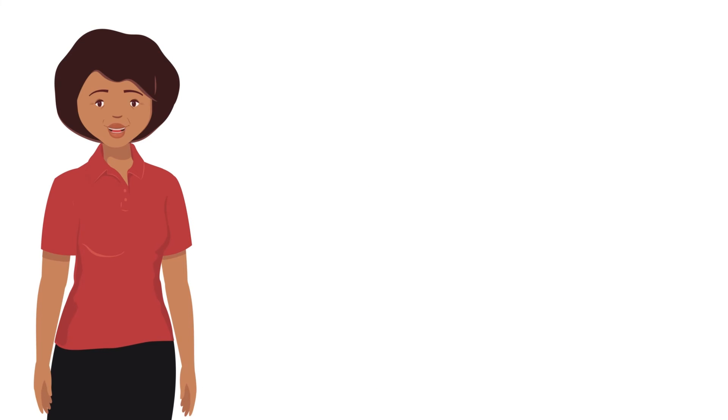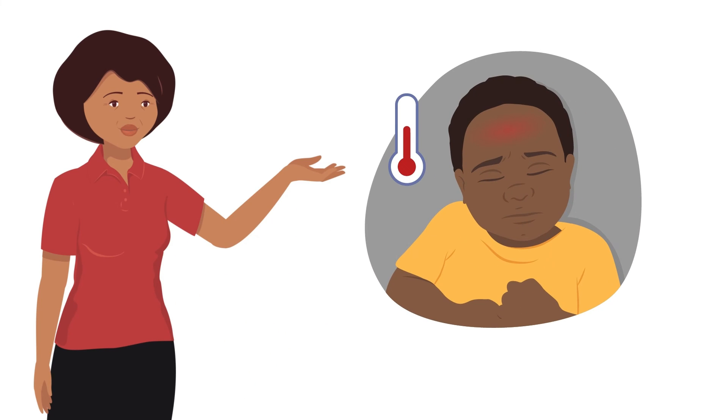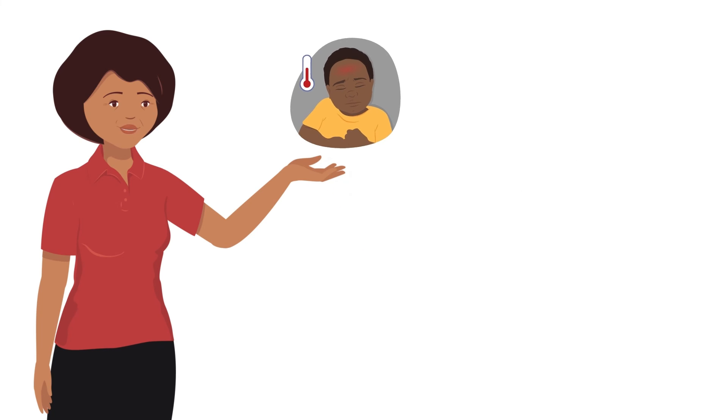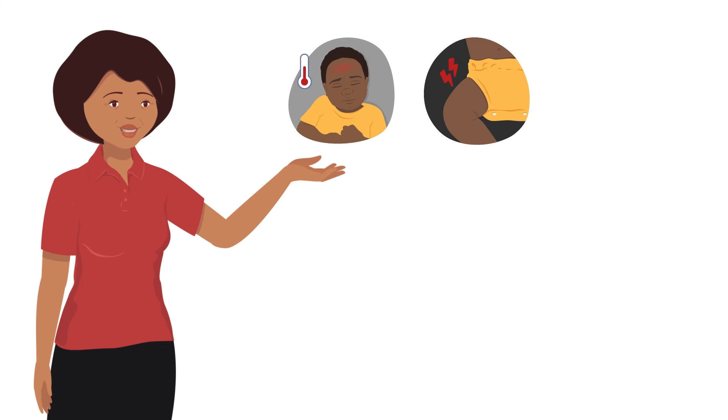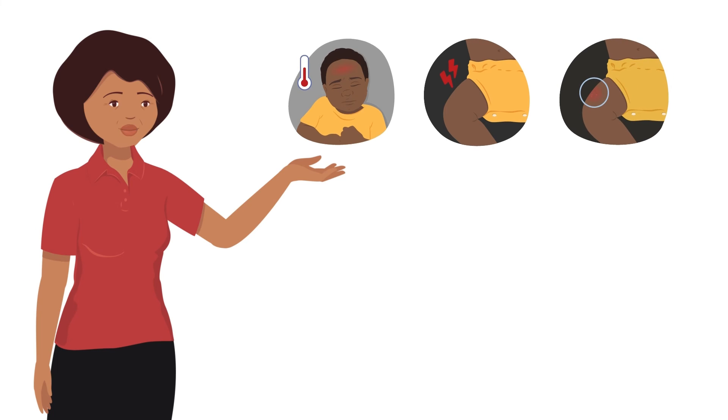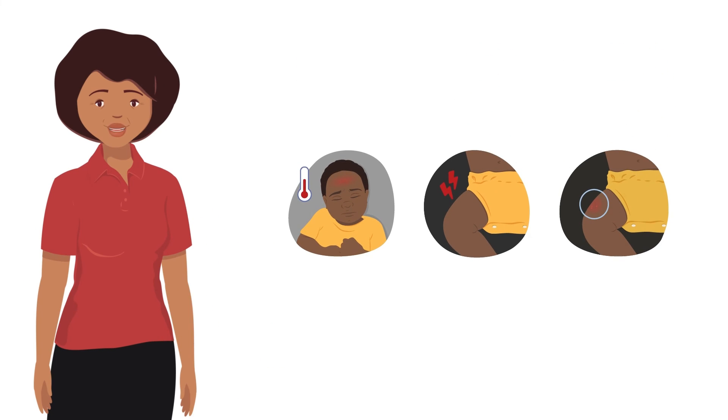But to build up its defenses or immunity, it activates the responses it uses when it's sick, which may lead to a short period of fever and body aches. A child may also feel a bit of pain at the injection site or even some redness. All of these reactions or side effects are normal and expected.